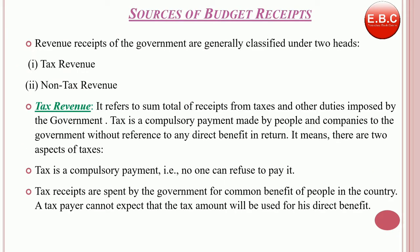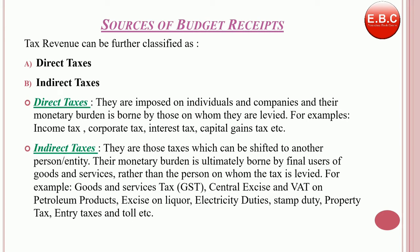Revenue receipts are further classified into two sources: tax revenue and non-tax revenue. Tax revenue refers to the sum total of income from taxes and other duties imposed by the government. It is a compulsory payment made by the people and companies to the government without reference to any direct benefit or return. There are two key aspects of taxes: first, taxes are compulsory — no one can refuse to pay them; second, tax receipts are spent by the government for the common benefit of the people. A taxpayer cannot expect that the tax amount will be used for his direct benefit.